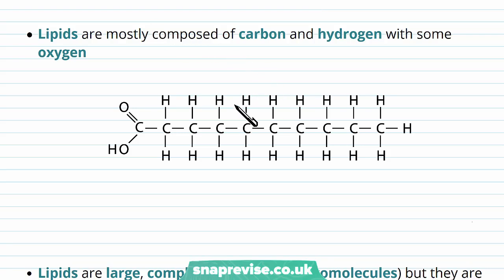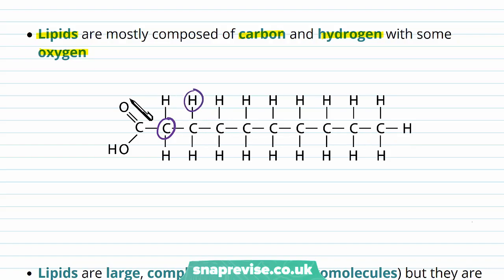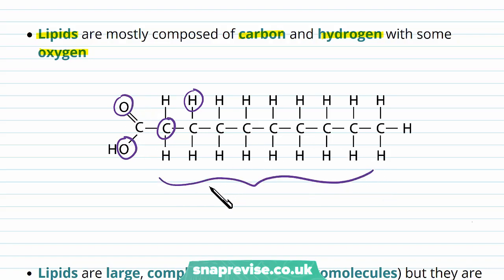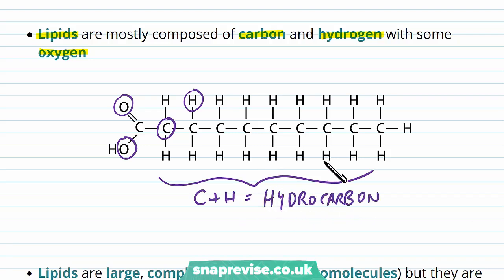Lipids, whether we're talking about triglycerides or phospholipids, are mainly composed of the elements carbon, hydrogen, and there is some oxygen as well — mainly the same elements as carbohydrates. We can see lots of carbon across the chain of the molecule, evidence of hydrogen, and some oxygen, although the oxygen is a lot less common. We tend to see this long chain of carbons and hydrogens, which is known as a hydrocarbon chain. Hydrocarbon chains are often found in these lipid structures.